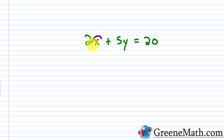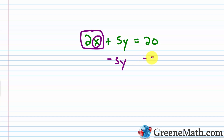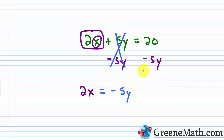If I want to isolate x, I always want to start by isolating the variable term that contains the variable I'm trying to isolate. So I would start by isolating the 2x. To do that, I subtract 5y away from each side of the equation, leaving just 2x on the left. Since 5y minus 5y is 0, on the right I have negative 5y plus 20.